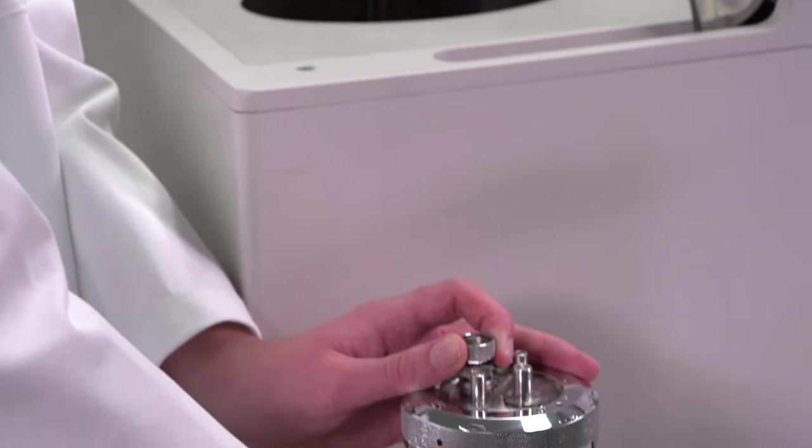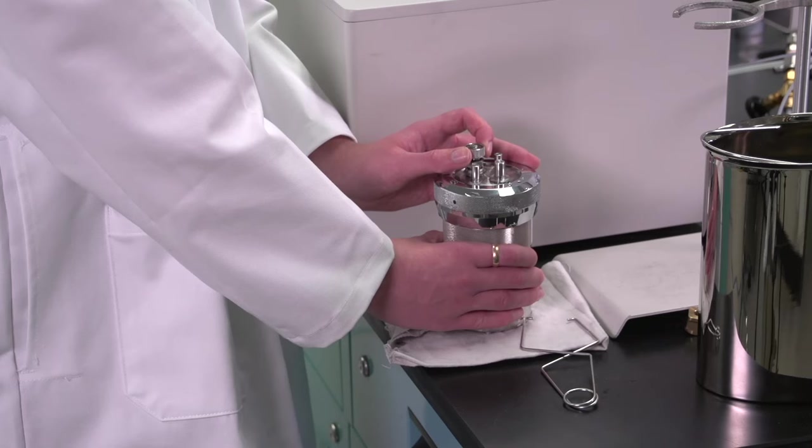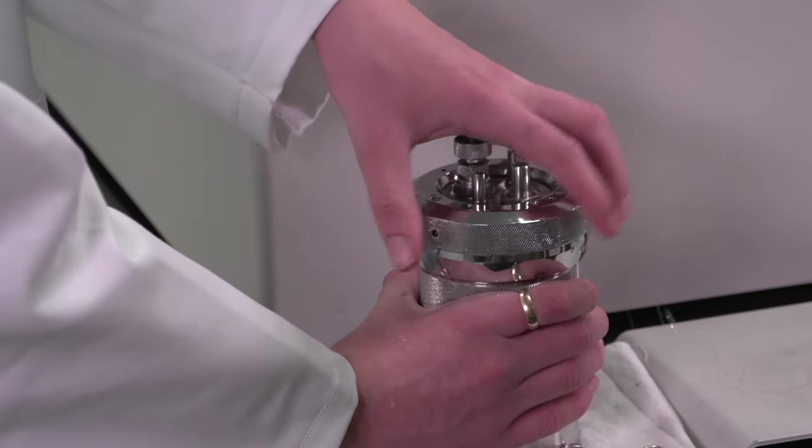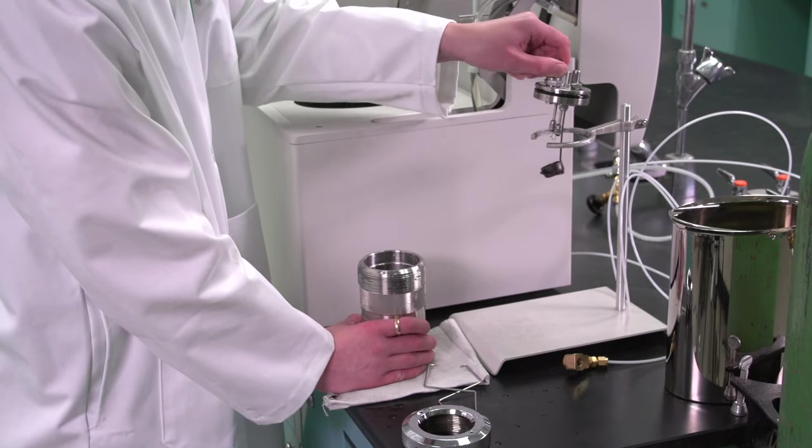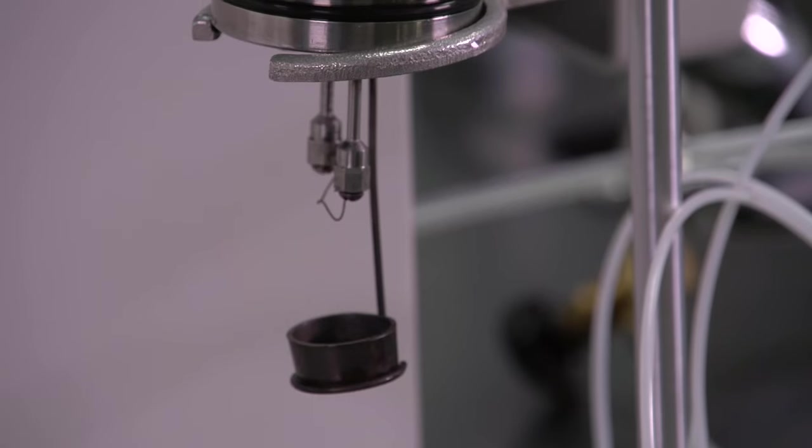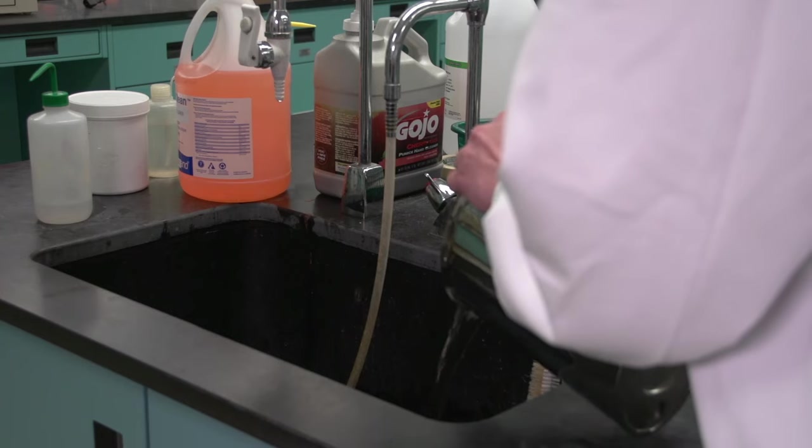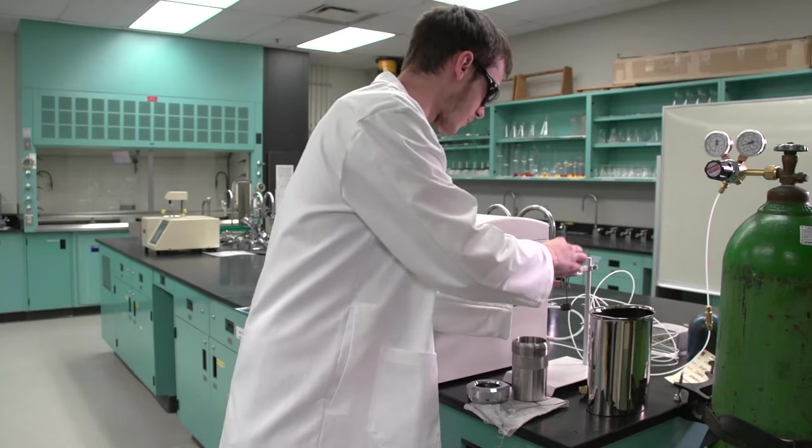The pressure should be released over a time period of at least one minute. After the pressure has been released, unscrew the cap and remove the bomb head from the cylinder. Inspect the sample cup for evidence of unburned material. Empty and dry the water bucket and dry the calorimeter components between runs.